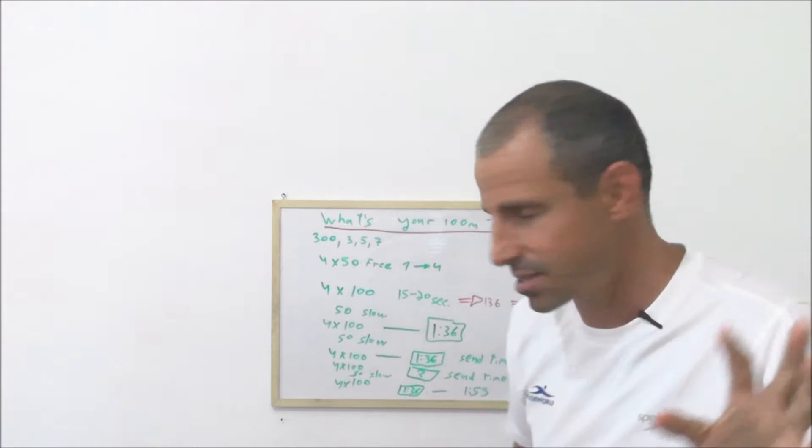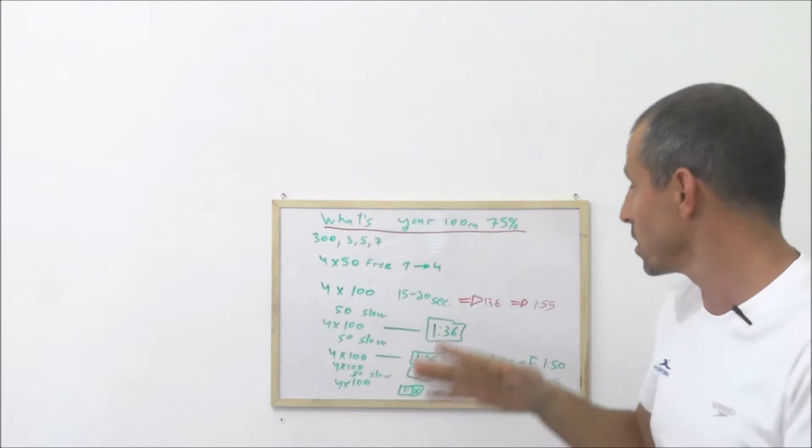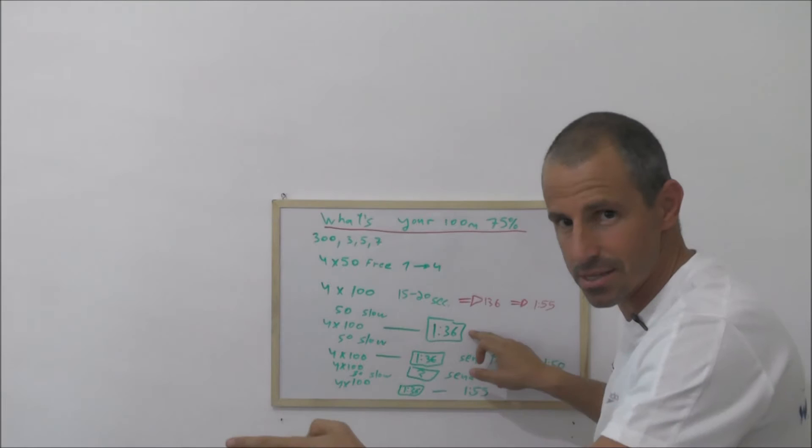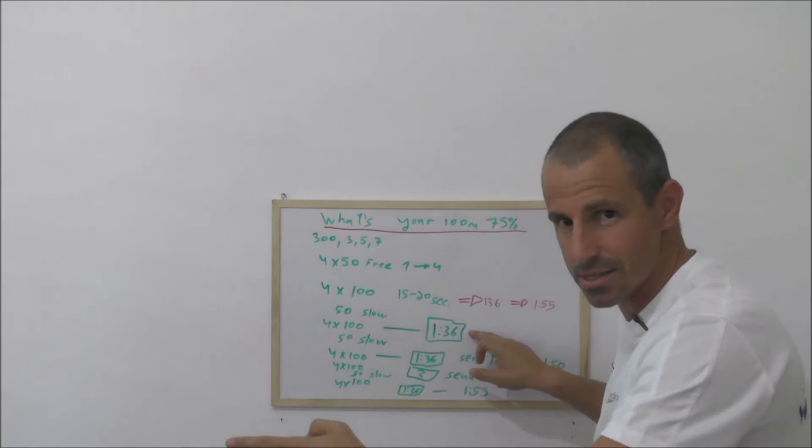The second drill you probably understand more. You're gonna control 1:36, doesn't matter what's your average pace, but you're gonna control it and you're gonna try to swim all four of 100 with send-off time of 1:55 and try to swim exactly 1:36. It's not gonna be exactly but you're gonna try.